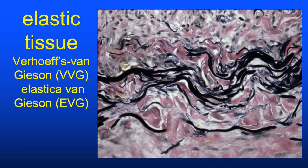A stain for elastic tissue I order several times per year is the VVG or EVG stain. It's considered a regressive stain in that elastic tissue has a high affinity for ferric chloride which resists de-staining. As a silver stain, the reaction product is black—this is useful because elastic fibers cannot be seen on H&E unless there is solar elastosis.